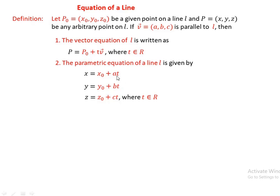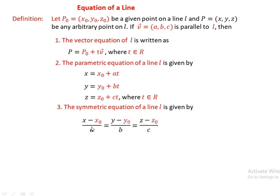This is the symmetric form of the equation of a line L, given by: (x minus x-naught) over a equals (y minus y-naught) over b equals (z minus z-naught) over c. Here, the vector V with components (a, b, c) must be a non-zero vector.